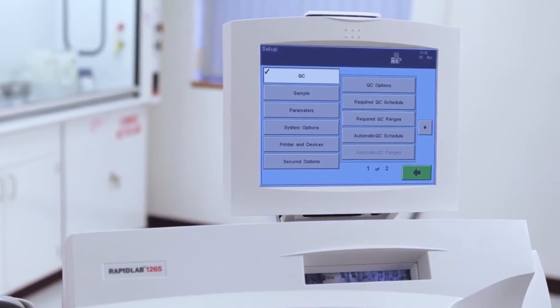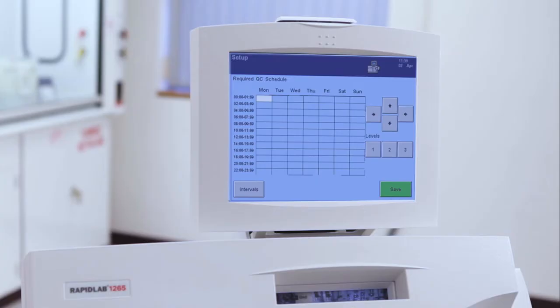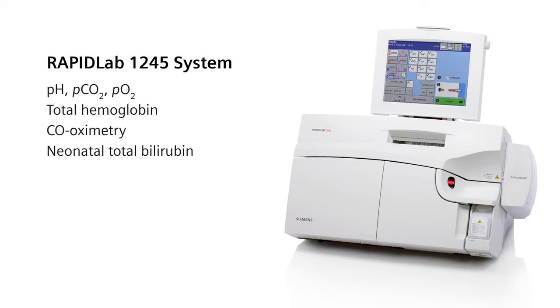Simply program the level and frequency of QC to be run according to your individual hospital QC guidelines. There are four different models of the RapidLab 1200 systems depending on the analytes tested. The RapidLab 1240 measures pH and blood gas only while the RapidLab 1245 system adds full co-oximetry to the basic blood gas panel.